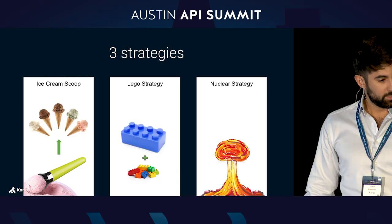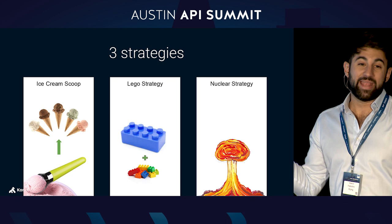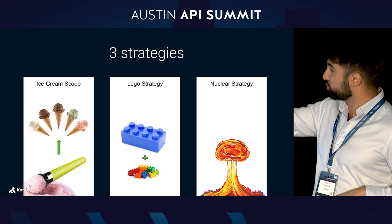We have to take this transition from a very pragmatic standpoint. It's not nothing or everything — it's not zero to a hundred. It's a transitional process that will give confidence to the team as they keep pursuing it, and will give confidence to the leadership that as we do this transition it's actually going to help the business. There are three different strategies to transition from monolith to microservices. The first one I call the ice cream scoop strategy.